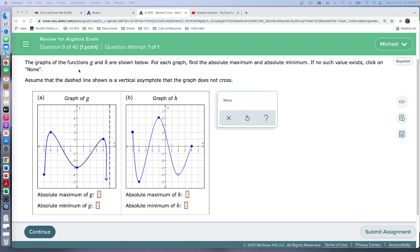For the A question, the graphs of functions G and H are shown. For each graph, find the absolute maximum—that means the highest of the high—and the absolute minimum—the lowest of the low. If no such values exist, click on none.